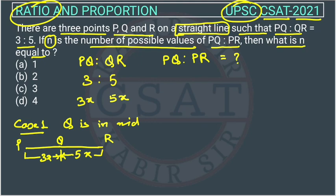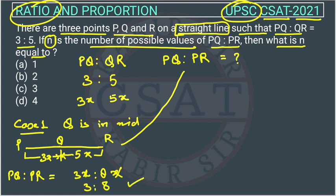Q is the midpoint. So what is PQ? PQ is 3X and what is PR? PR will be, now I am finding this value. PQ is 3X and PR is 3X plus 5X, 8X. This X will get cancelled, so the ratio is 3 is to 8. This is one possible value.